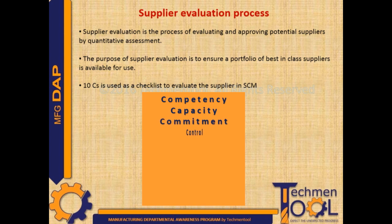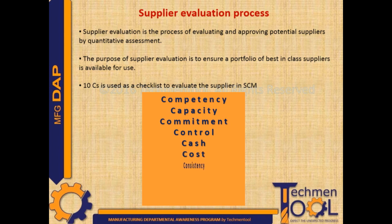Control refers to how much control the supplier has over its policies, processes, procedures, and supply chain. Cash: the supplier should have good financial health. Cost: the cost of the product from the supplier should be reasonable.